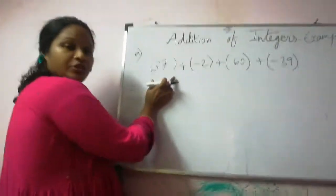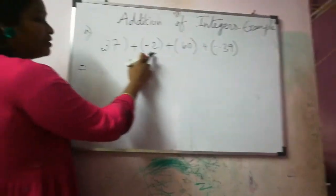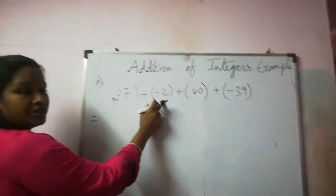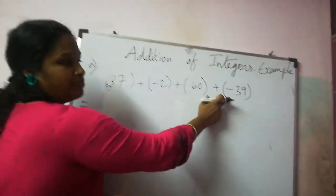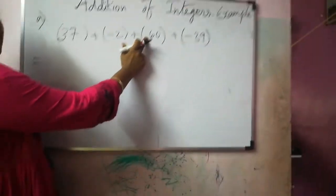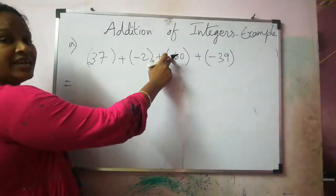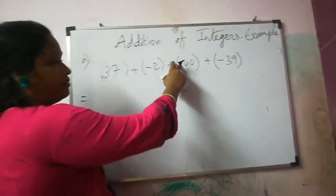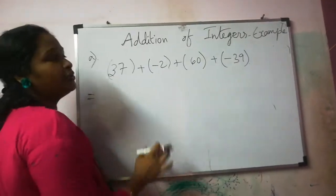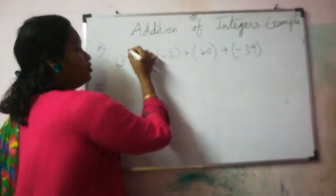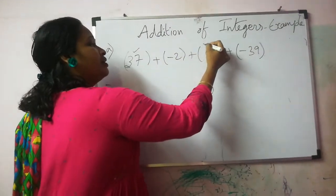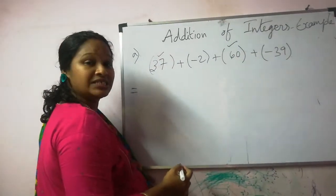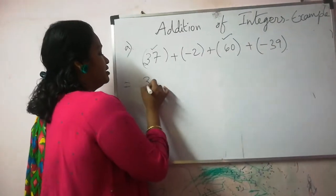Now see here children, the question is 37 plus minus 2 plus 60 plus minus 39. No sign here means there is a plus sign. Now how can you do this easily? First, you write down the same sign integers nearby.